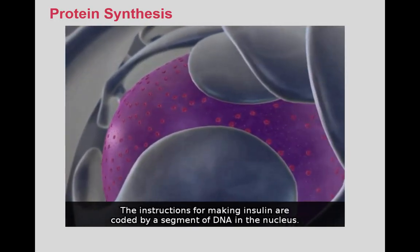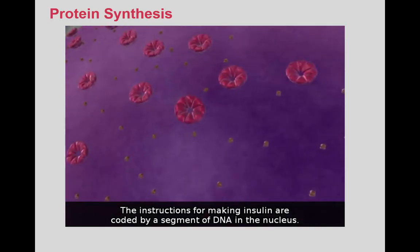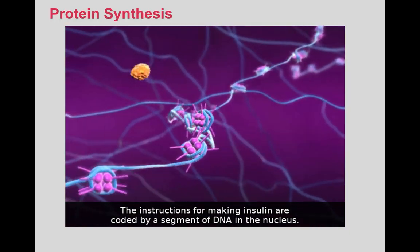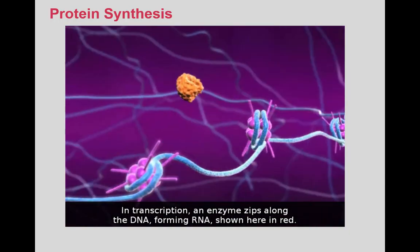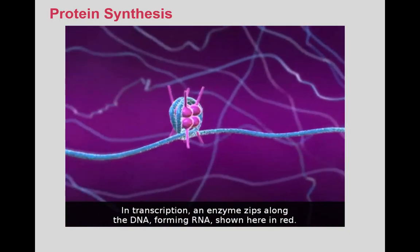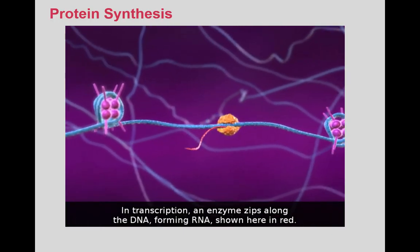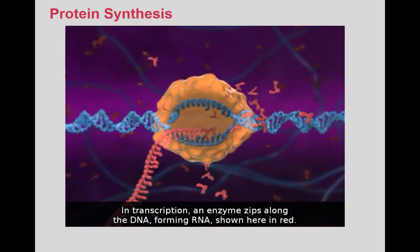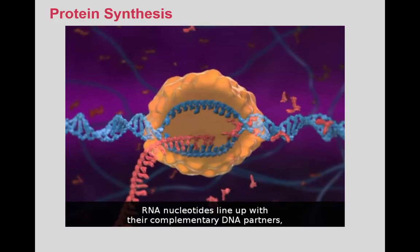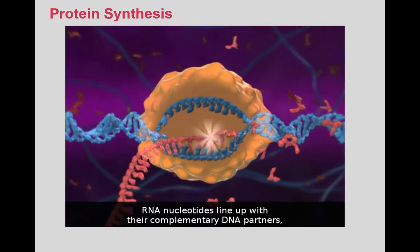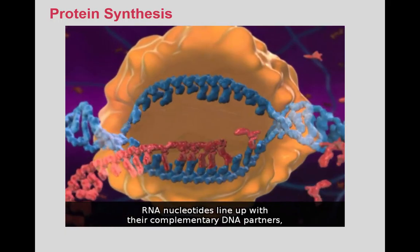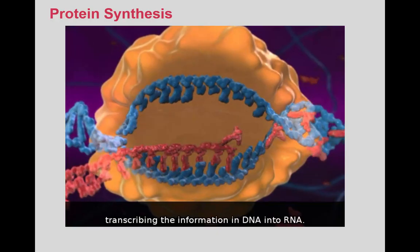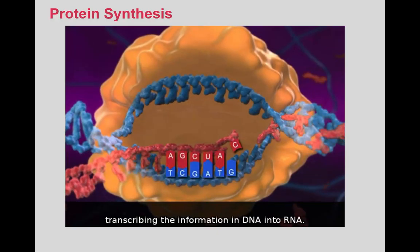The instructions for making insulin are coded by a segment of DNA in the nucleus. In transcription, an enzyme zips along the DNA, forming RNA, shown here in red. RNA nucleotides line up with their complementary DNA partners, transcribing the information in DNA into RNA.